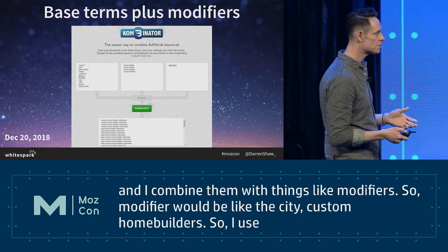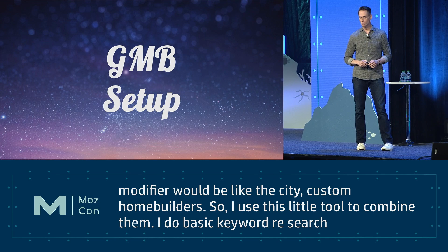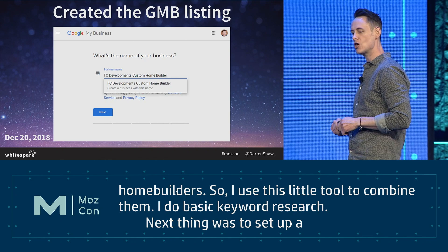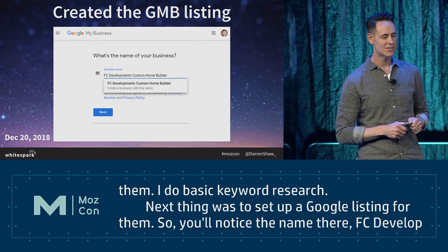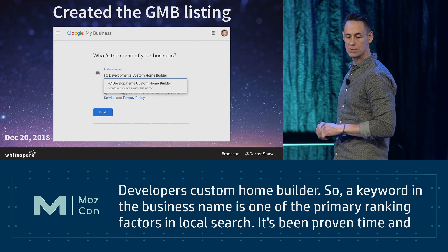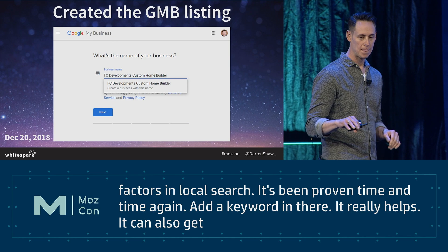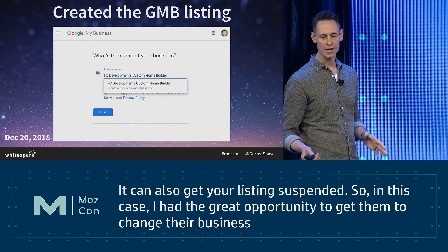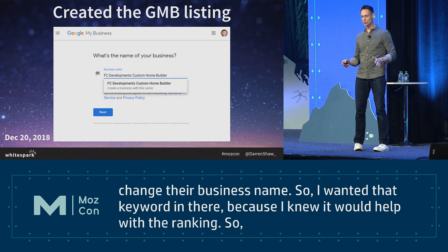The next thing was to set up a Google listing for them. You'll notice the name: FC Developments Custom Home Builder. A keyword in the business name is one of the primary ranking factors in local search - it's been proven time and time again. It can also get your listing suspended, but in this case I had the great opportunity to actually get them to change their business name, so we got it properly changed to FC Developments Custom Home Builder.